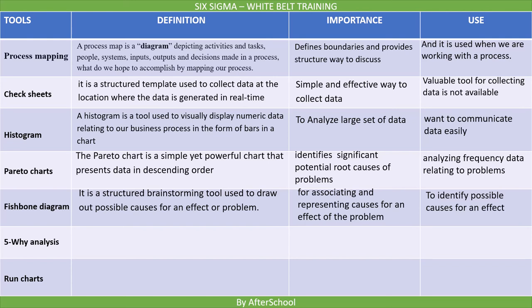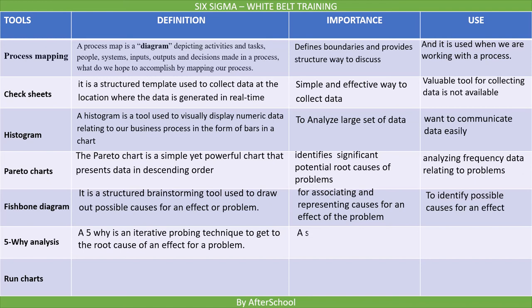The sixth tool is the Five Whys. A Five Whys is an iterative probing technique to get to the root cause of an effect for a problem. It is important because it is a simple yet powerful technique that helps the team to collectively reach root causes. It also determines the relationship between the different root causes of a problem and is one of the simplest tools to use, being easy to complete with no statistical analysis required.